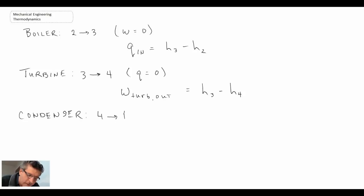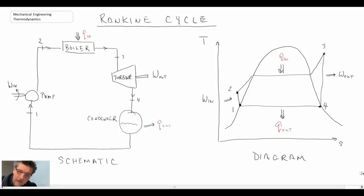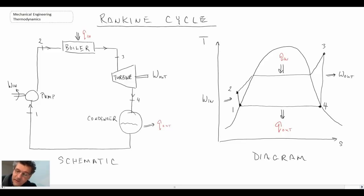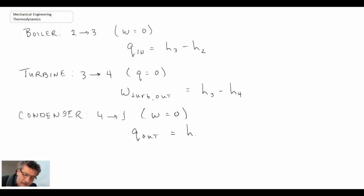The final component is the condenser, going from state four back to state one. The condenser is essentially a heat rejection device — in an ideal world, we go from saturated vapor down to saturated liquid through a phase change. Consequently, there is no work in the condenser, but there is heat transfer leaving the system, which equals the enthalpy at state four minus the enthalpy at state one.